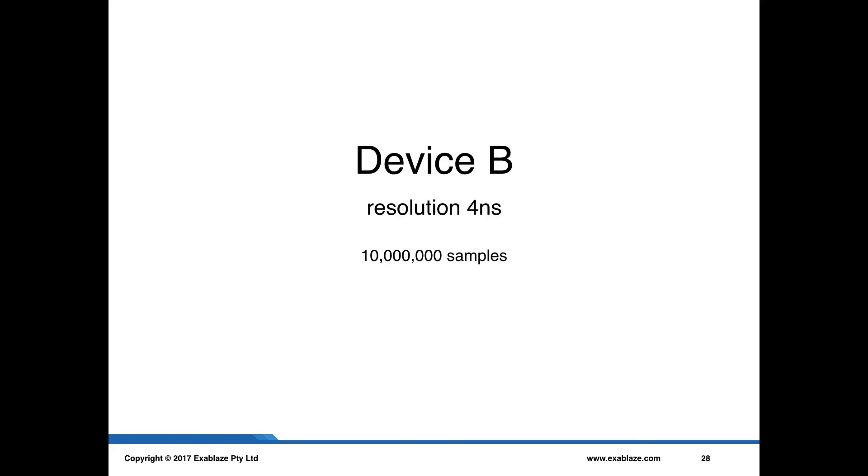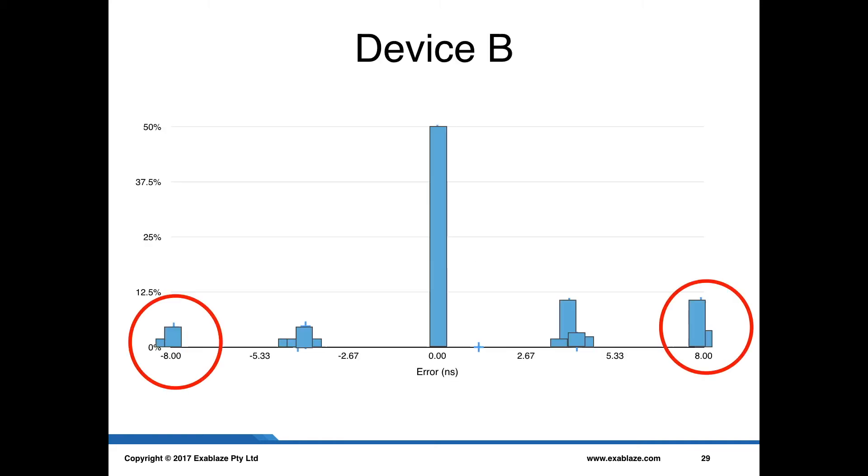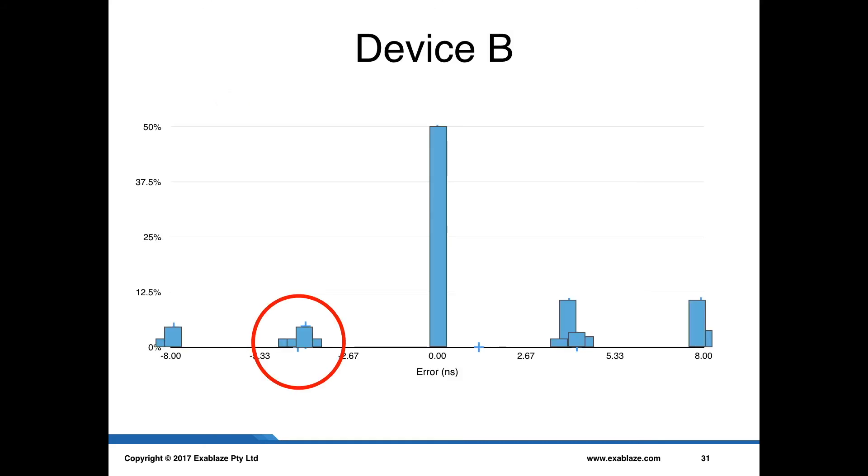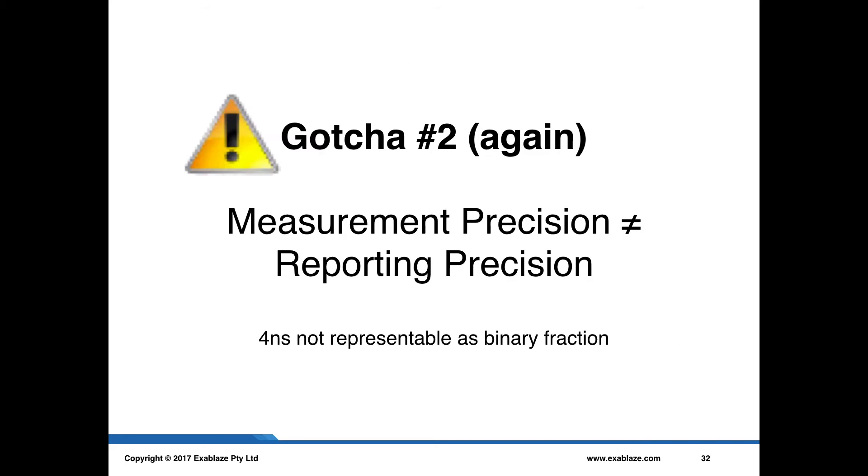Now, this is not unique to device A. Using device B, you get very much the same sort of thing. Device B again, 4 nanosecond resolution device, 10 million samples, and if we run that, we get very much the same sorts of effects. Again, we get a negative 8 bucket and a positive 8 bucket on the measurement. So, again, we have the same gotcha number one, which is that the measurement precision is not equal to the error bound. And on this particular device, you can see it has a very large quantization error. There are four buckets there, and that's because of the way that this device reports its values as a sort of a binary fraction. And so, once again, 4 nanoseconds is not representable evenly in the reporting precision.